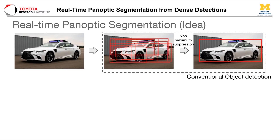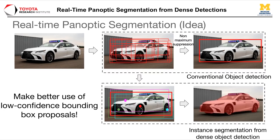We came up with this idea through a deeper look into conventional single-stage object detection algorithms that generate dense proposals. Instead of discarding low-confidence bounding box proposals, we use them as explicit embeddings for corresponding pixels and then group pixels with similar bounding boxes to construct object instance masks.